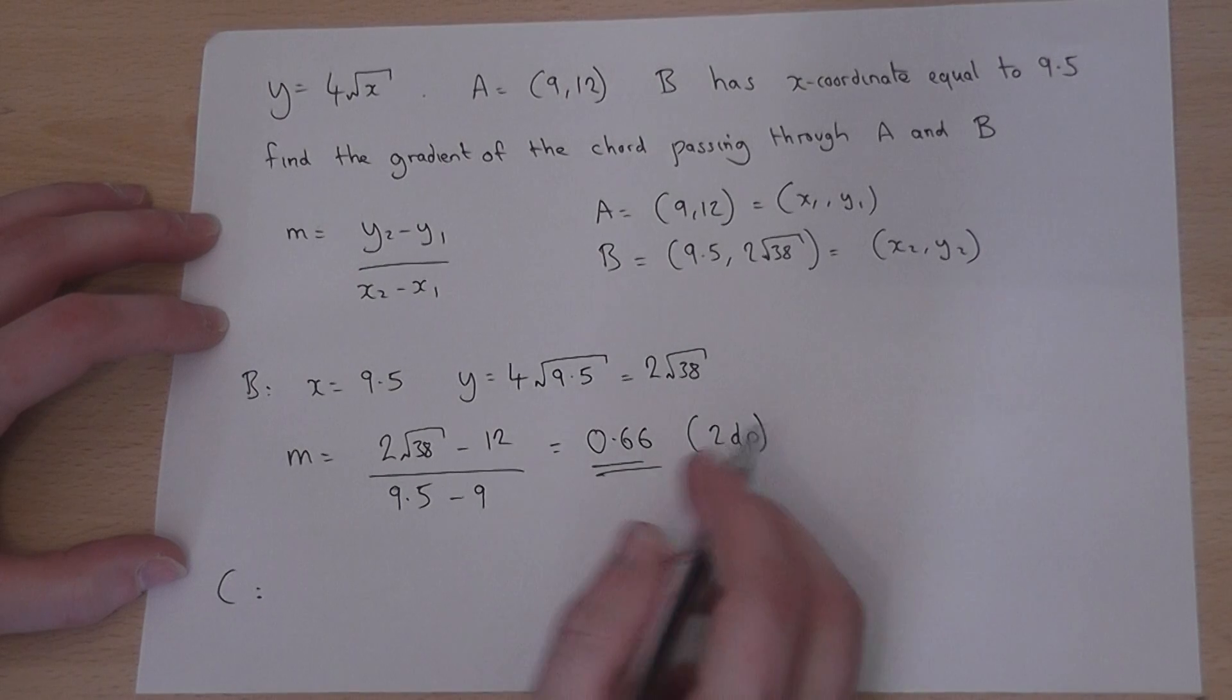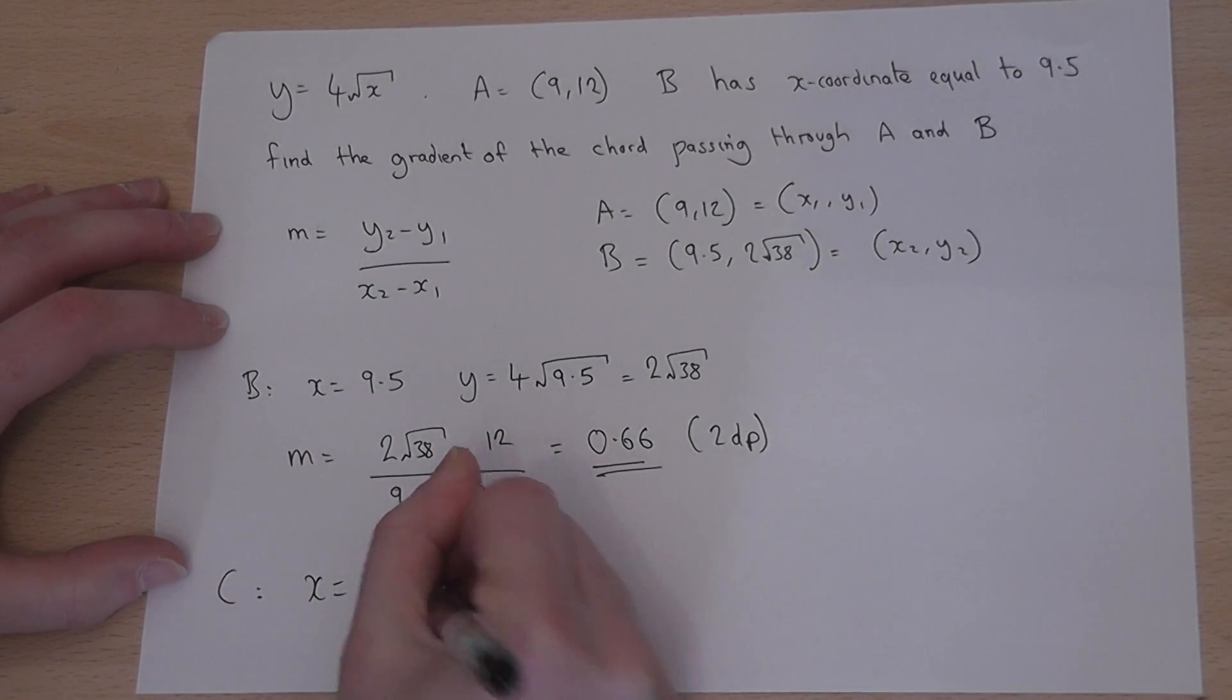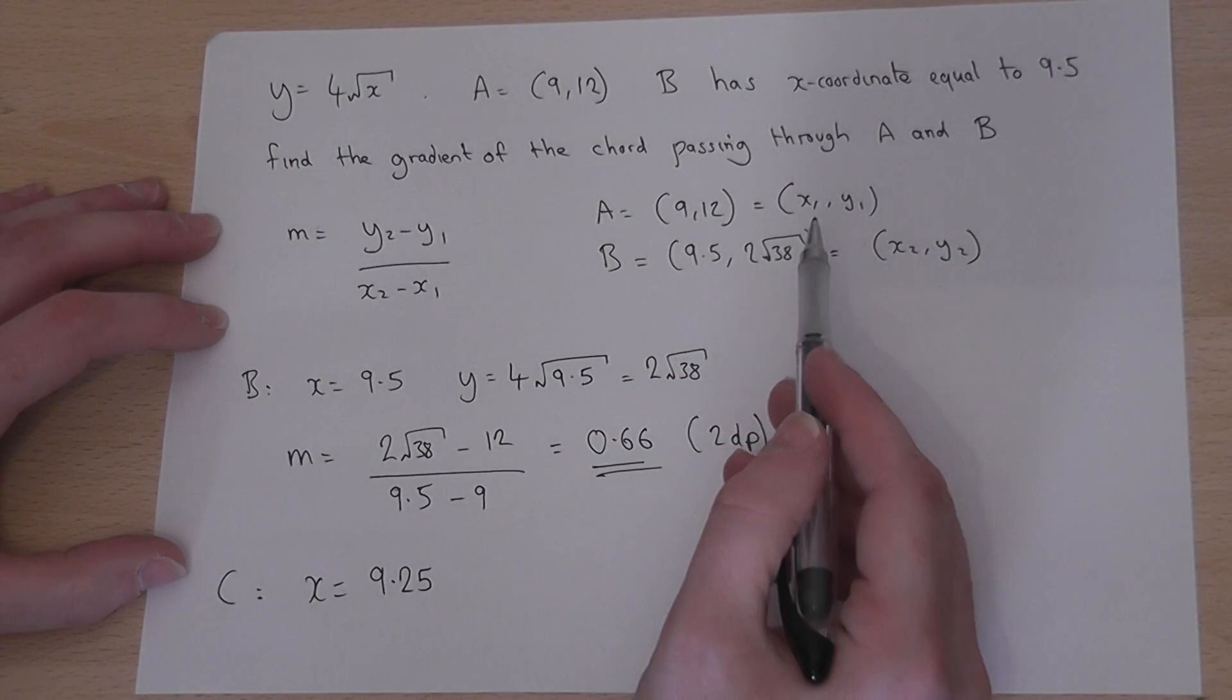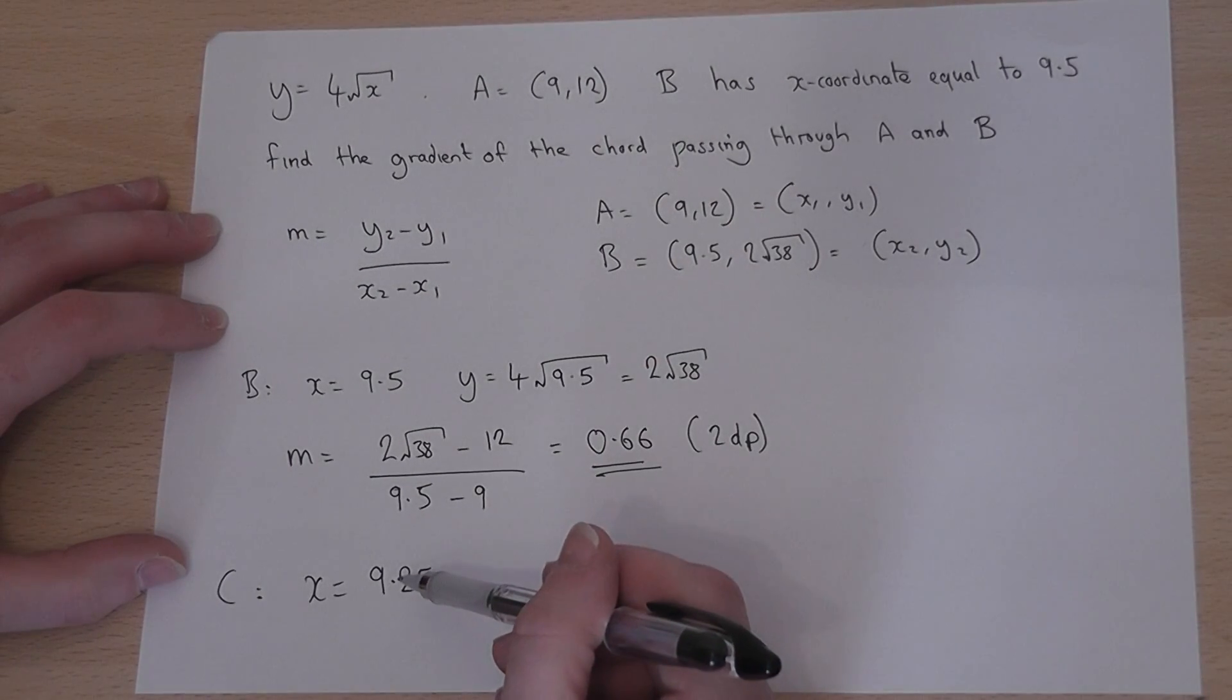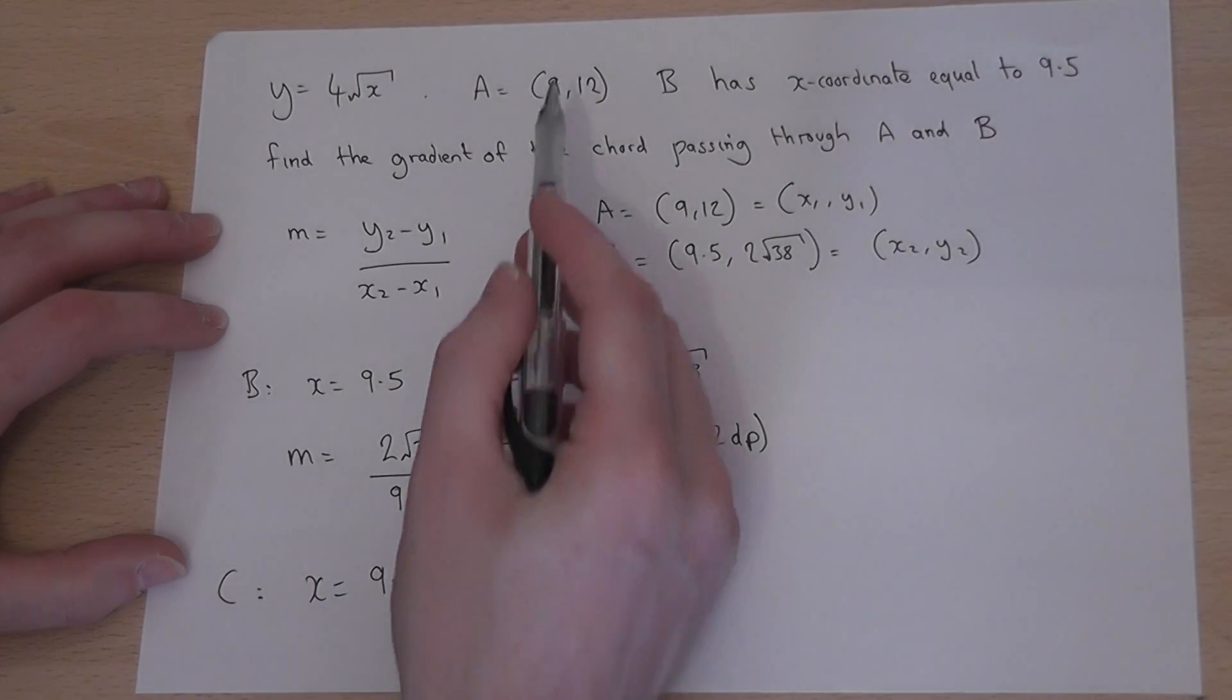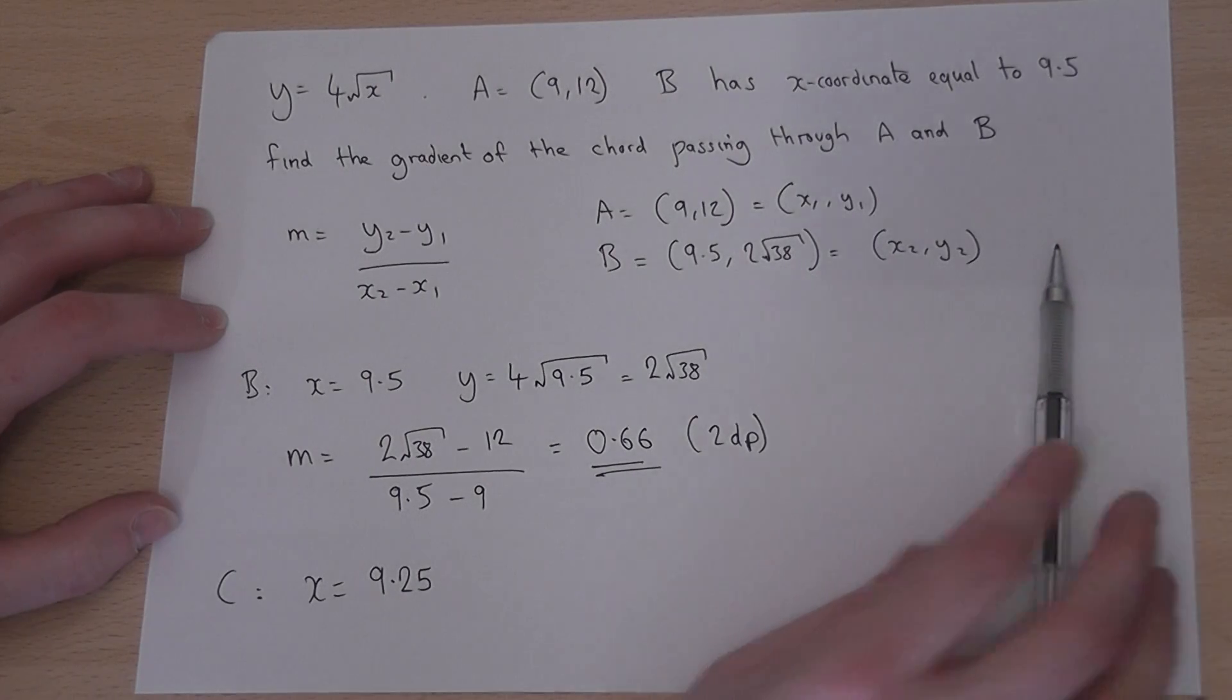So, if I picked C to be x equals 9.25, and worked out the calculation again, that would be an improved approximation to the gradient at A. If I picked 9.1, that's better still. And as C gets closer and closer to 9, the gradient approximation gets better and better.